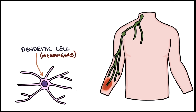The specific immune response starts with the dendritic cell presenting the antigens on the HLA class 2 molecules to the CD4 cells. These CD4 cells, which are a type of T cell, then proliferate and become T helper cells. The T helper cells present antigens on their HLA class 1 molecule that can be recognized by CD8 cells, another type of T cell. They also secrete cytokines that are responsible for making the CD8 cells proliferate and differentiate into cytotoxic T cells.